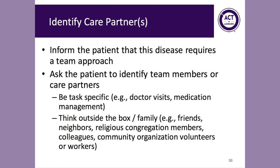First, identifying a care partner and noting this person's information in the medical record is critical. If the patient cannot identify an obvious care partner, you can help them think outside the box. Remind them that this disease is a marathon, not a sprint, and it is a team sport, not an individual sport. This disease requires a team approach if the patient is to remain independent and well. The care partner does not have to be just one person — it can be different people who help with specific tasks, and the person does not need to be a family member or even a close friend. Without a solid, well-informed team, a person with dementia is at higher risk for health crises and institutionalization.